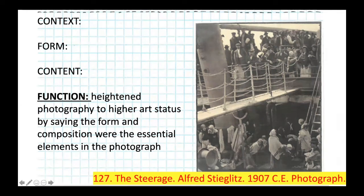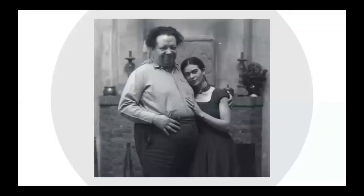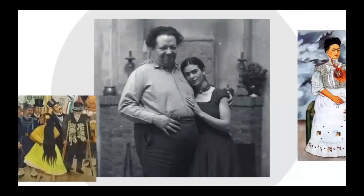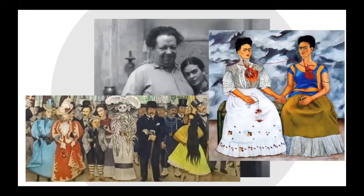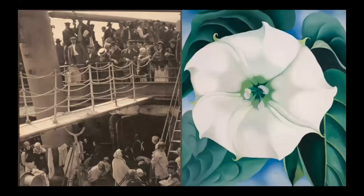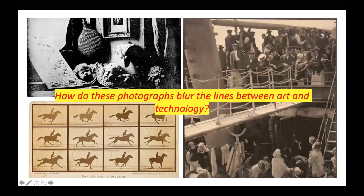That guy with the white hat had to be there for this to be the photograph that it is. This also relates to Vik Muniz, who recreates famous works of art out of non-traditional materials like chocolate syrup — appropriating artworks. Also worth noting: Alfred Stieglitz was married to Georgia O'Keeffe, who is not on our 250, which is a shame because she should be. Overall, we should be able to write an essay or have a discussion about how these photographs blur the lines between art and technology, and how they promote photography as a form of fine art.